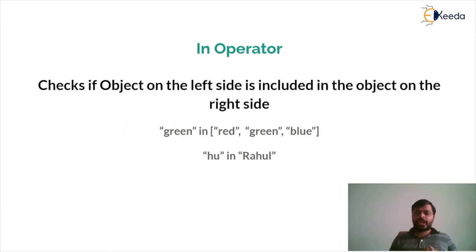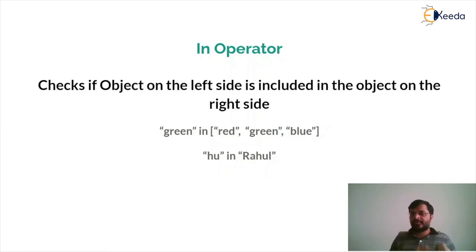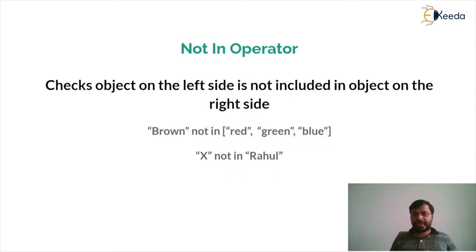The 'in' operator checks if the object on the left side is included in the object on the right side. For example, checking whether an element is present in a list, or whether a character or a sequence of characters — a substring — is present in a string. The 'not in' operator checks whether the object on the left side is not included in the object on the right side, which is exactly opposite of the 'in' operator.